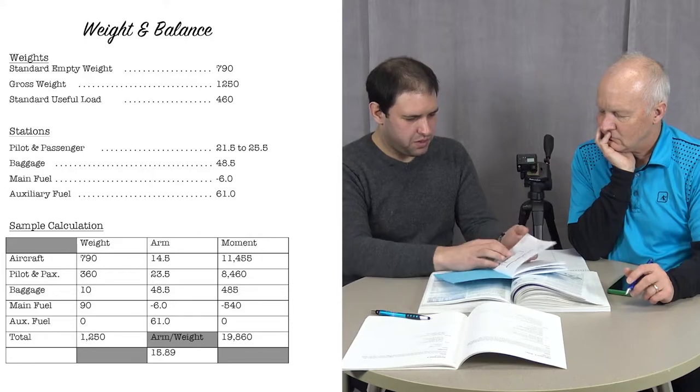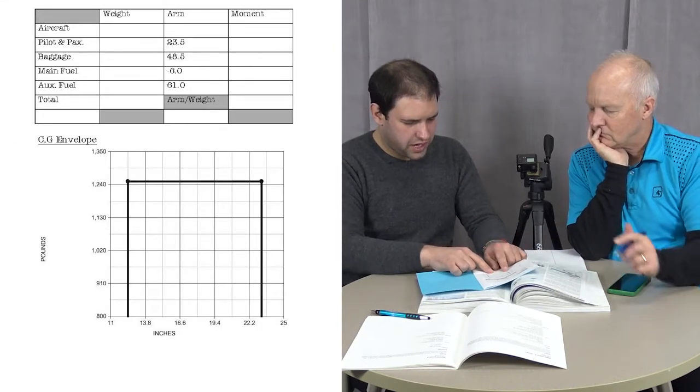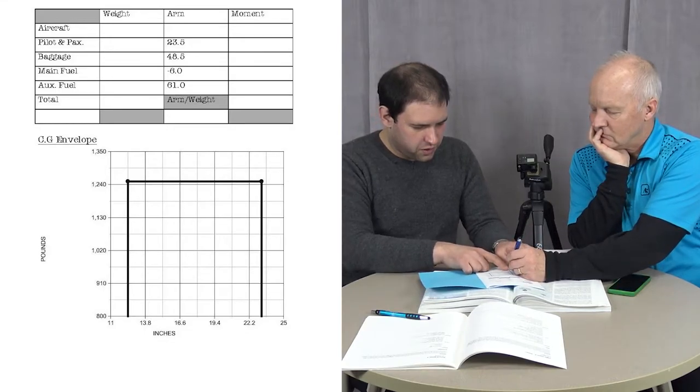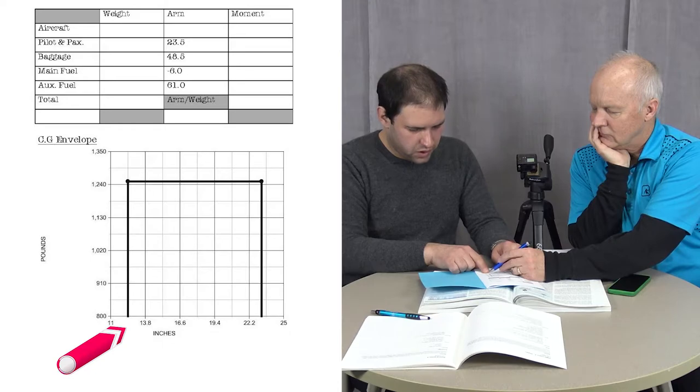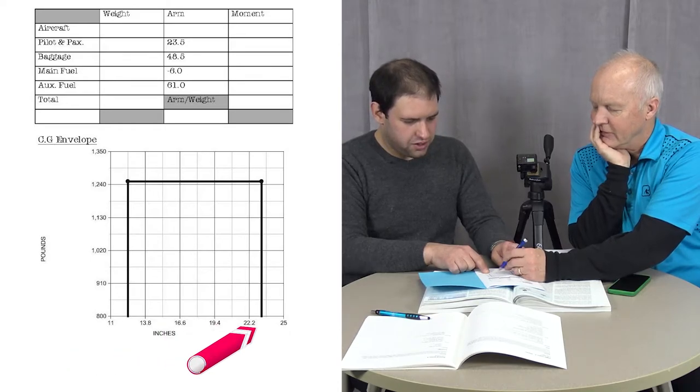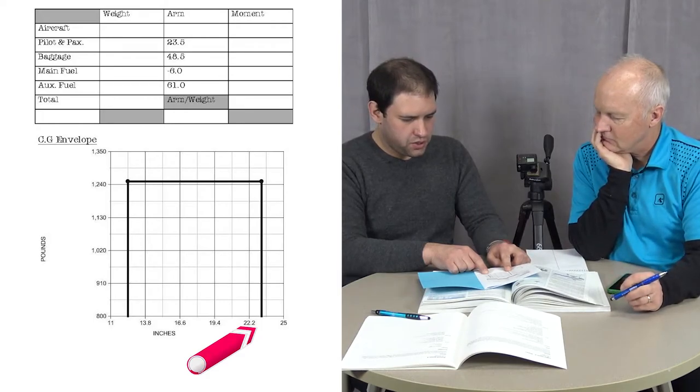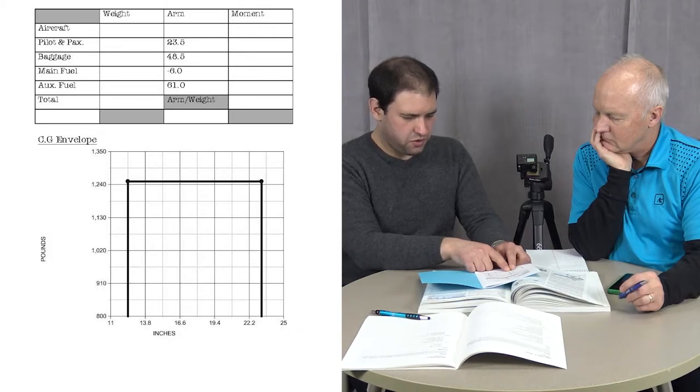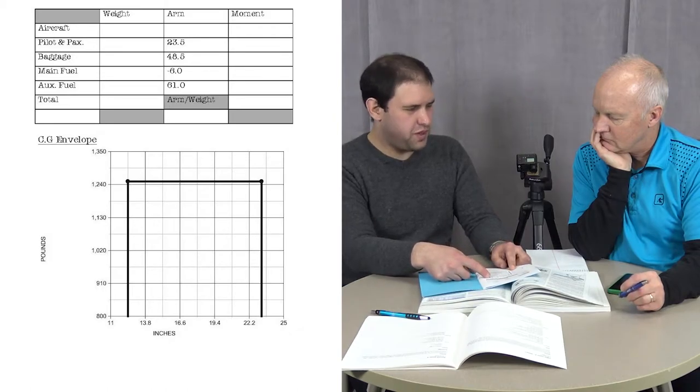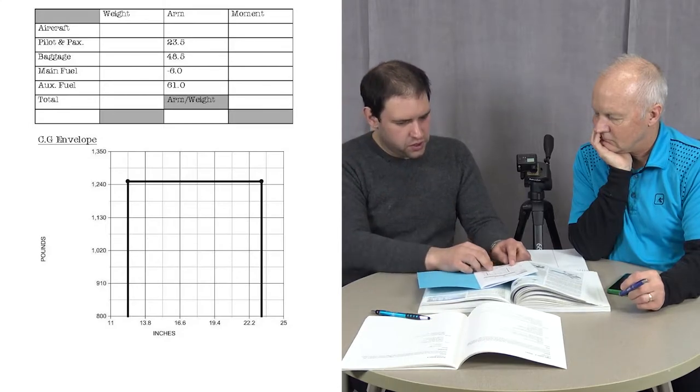If we look on the next page of the POH, you can see that the allowable center of gravity range goes from about 12 to about 23 inches. That's a good 11, 12 inches. The allowable weight goes from 800 pounds up to 1,250 pounds, which is the maximum gross weight of the airplane.